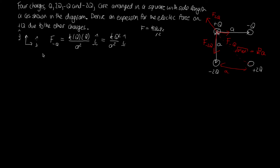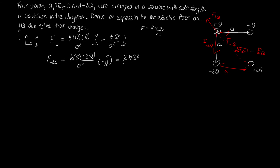Now for F_(-2q): the force is in the negative ĵ direction since it's an attractive force directed downward. Using Coulomb's law with charges q and 2q separated by distance a, the magnitude is 2Kq²/a². So F_(-2q) = −(2Kq²/a²) ĵ.